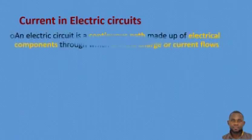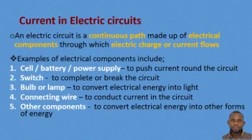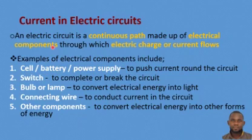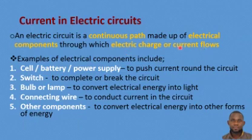We will begin with current in electric circuits. Before we proceed, I would like us to define an electric circuit. By definition, an electric circuit is a continuous path made up of electrical components through which electric charge or current flows. The important points in this definition are: continuous path, electrical components, and current flow.